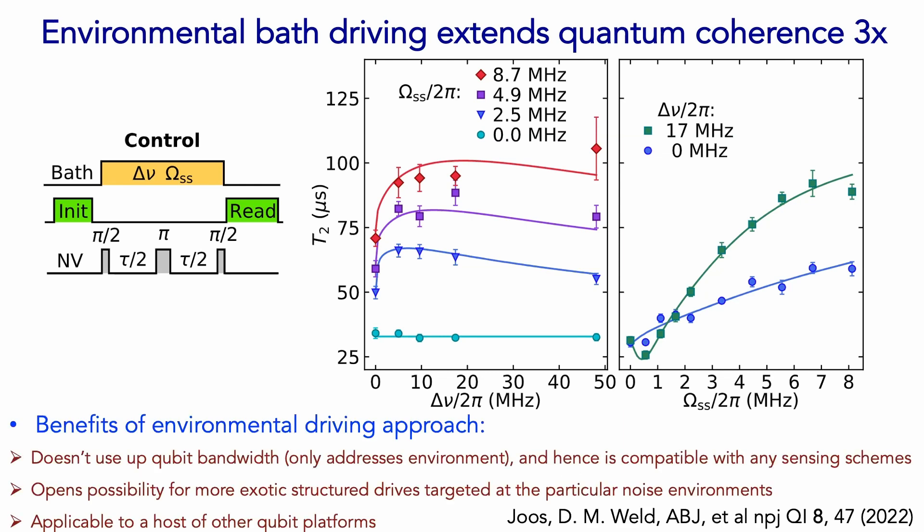Why not just use dynamical decoupling — apply a bunch of pulses to the NV center? Yes, you can do that, but when you do that, you're using up a lot of the bandwidth of the qubit. If you want to do a sensing sequence or some gate operation with your qubit, you have to interleave that with your dynamical decoupling. Here, I leave the NV center totally untouched — I'm only driving the bath — and I leave my NV center totally free to do whatever I want with it. So there's some advantage there, and I think it opens up exciting directions for developing more exotic structured drives that most efficiently decouple a particular noise environment.